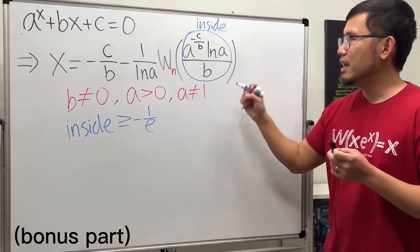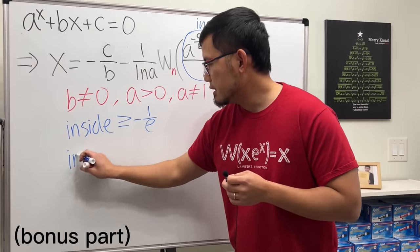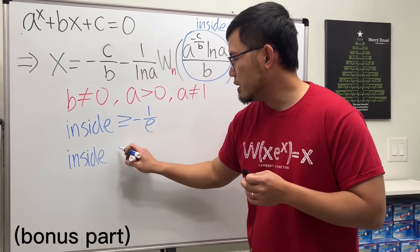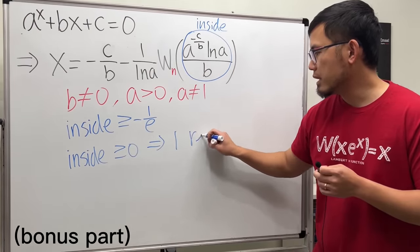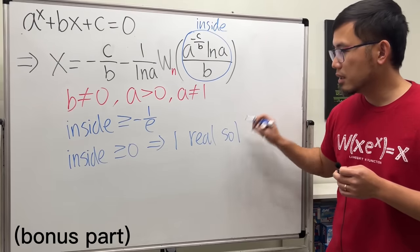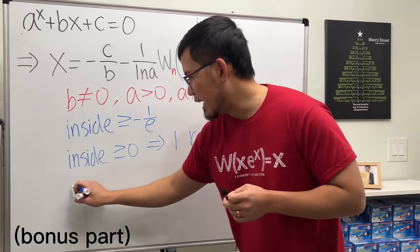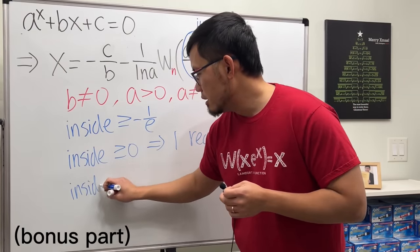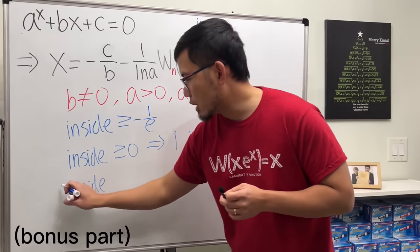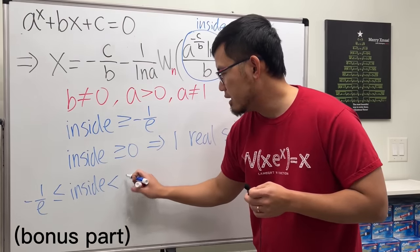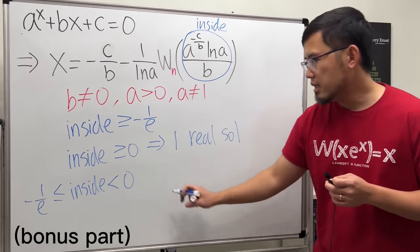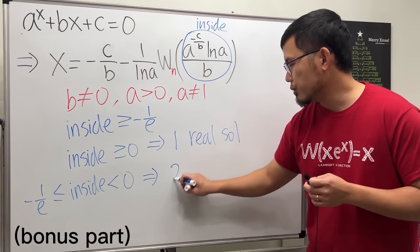It's depending on the inside. Okay. If the inside turns out to be greater than or equal to zero, then we are going to get just one real solution. And if the inside is in between of this and that, so I will write this down like this, between negative 1 over e and less than zero like this, then we are going to get two real solutions.